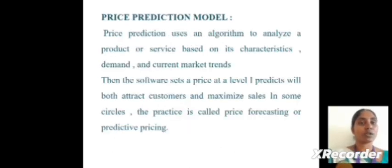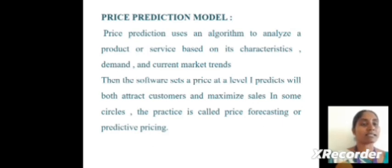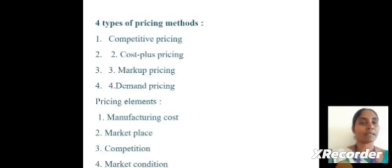Next is the price prediction model. The price prediction model uses an algorithm to analyze a product or service based on its characteristics, demand, and current market trends. The software sets a price at a level it predicts will both attract customers and maximize sales. In some circles, this practice is called price forecasting or predictive pricing. There are four types of pricing model methods: competitive pricing, cost plus pricing, markup pricing, and demand pricing. Pricing elements include manufacturing cost, marketplace, competition, and market condition. Thank you.